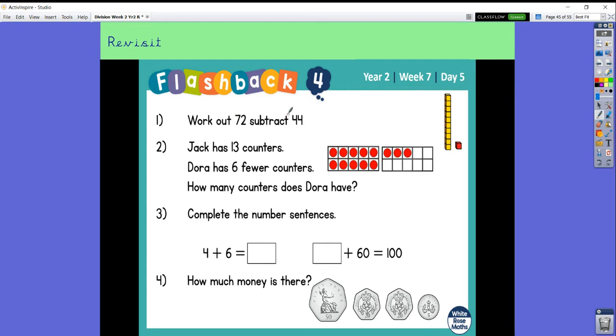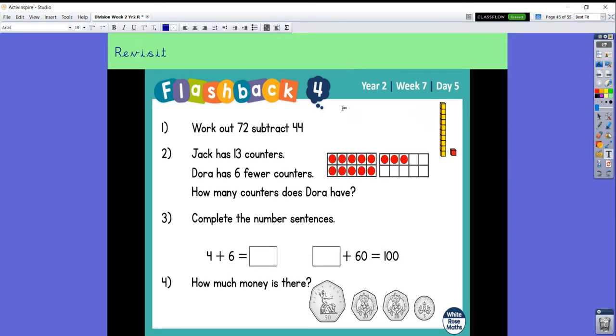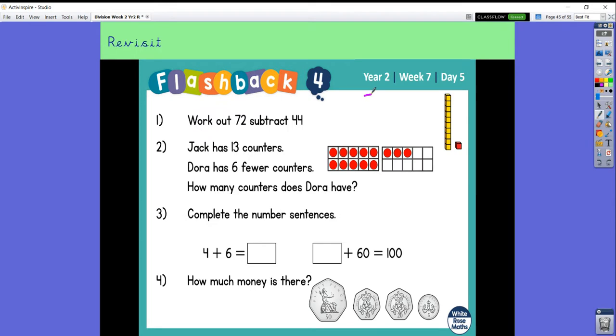We would like to do 72 subtract 44. Okay, so we are going to look at using a little bit of our column method. So we've got 72, we're going to subtract 44. I'm going to do my big equal sign down here. Two take away four, I cannot do that. So I'm going to take a ten from here, so I'm going to have six tens here. I'm going to put a ten on here. Twelve take away four. That gives me eight. I've got six take away four, and that gives me 28.